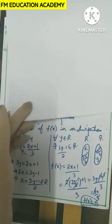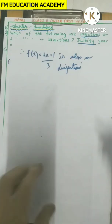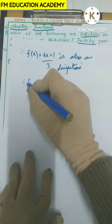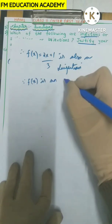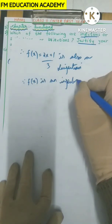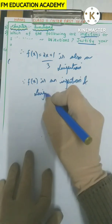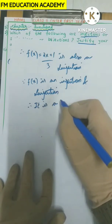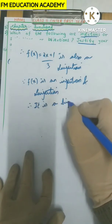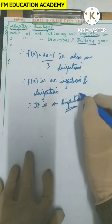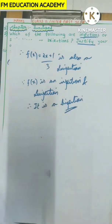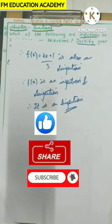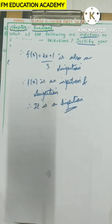Since f(x) = (2x + 1) / 3 is both an injection and a surjection, therefore it is also a bijection. So among the three options — injection, surjection, or bijection — we can say it is a bijection. This completes our first answer. Hope you found this video helpful. Please like, share, subscribe, and share the channel with your friends. Thank you.